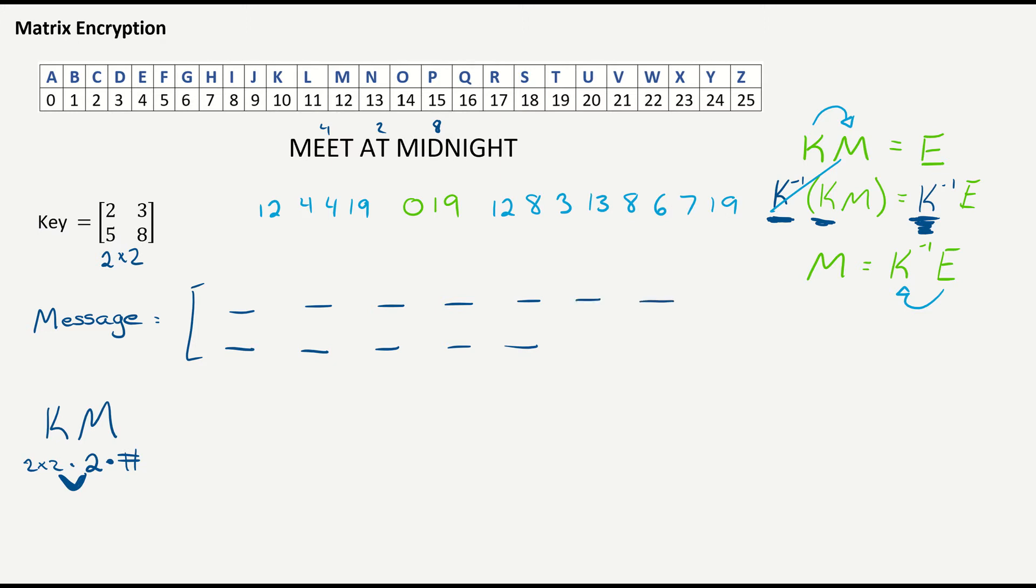So one, two, three, four, five, six, seven. And I can go in and fill the numbers. So I go 12, 4, 4, 19, 0, 19, 12, 8. And I go to the second row, 3, 13, 8, 6, 7, 19. So that filled it in perfect.